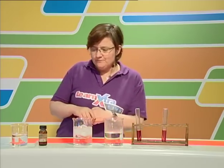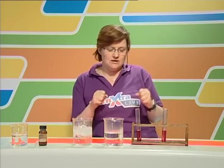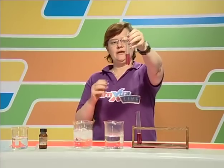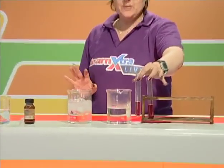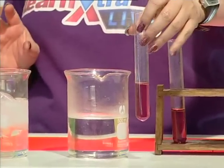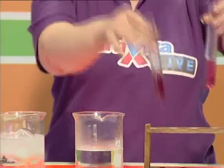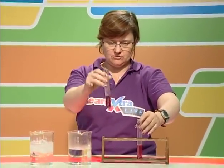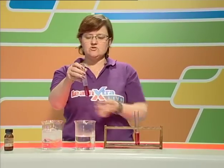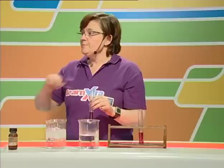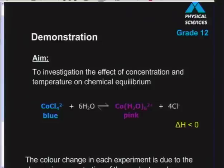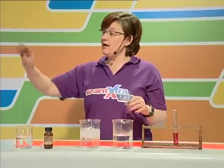We're going to look at chemical equilibrium — a little bit of chemical magic. We have a control test tube that's a nice pink color. What we have here is a solution of cobalt chloride in a little water and ethanol. On the board is the equation: CoCl₄²⁻ (blue) + H₂O ⇌ Co(H₂O)₆²⁺ (pink) + Cl⁻. The delta H is negative, meaning the forward reaction is exothermic.